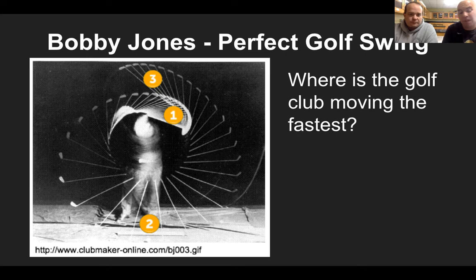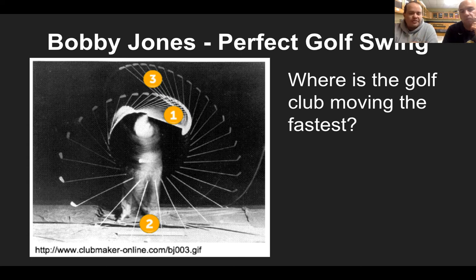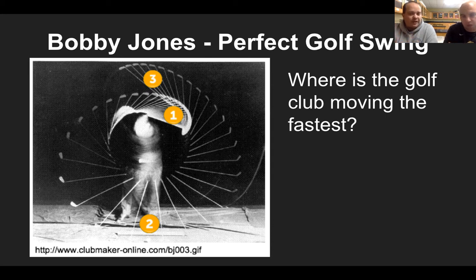Here's another one. I'm not a golfer at all, but this is Bobby Jones — a famous golfer known for having the perfect golf swing. This looks really weird because it looks like there's a bunch of different clubs. It's not — there's just one club that happens to be moving, and they're taking pictures every tenth of a second or quarter of a second. That's why it looks like there are a lot of different golf clubs, but it's really just one golf club following a path of motion.